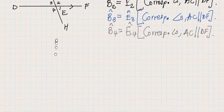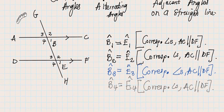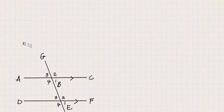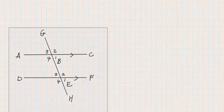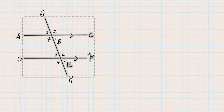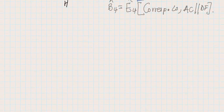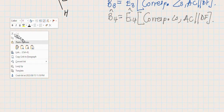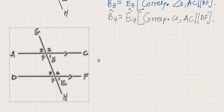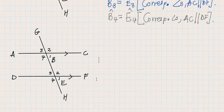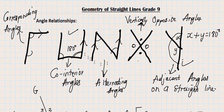Last time when we spoke about corresponding angles we used this shape, so I'll need us to use this shape again to find co-interior angles. We only have two pairs of co-interior angles in this shape and they'll be pretty easy to find.